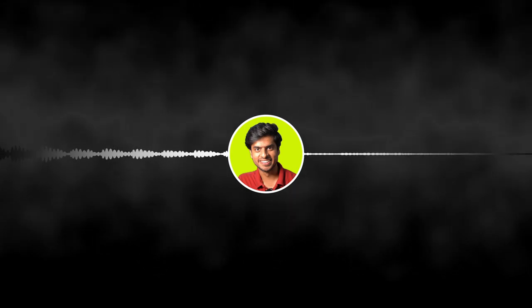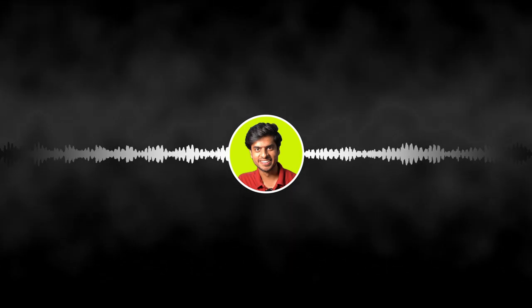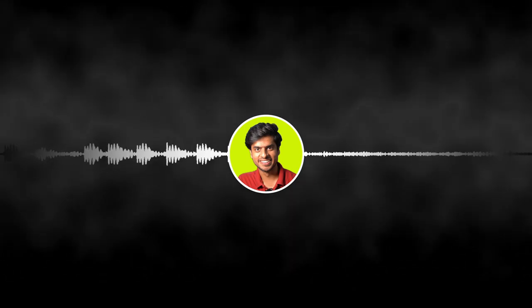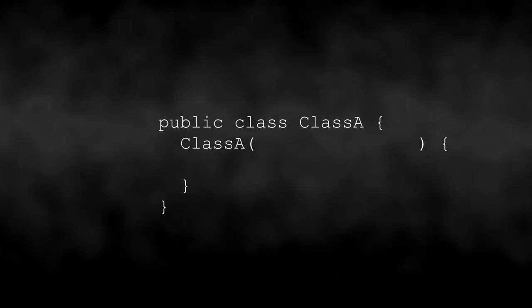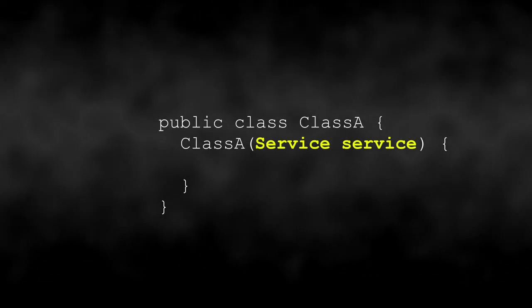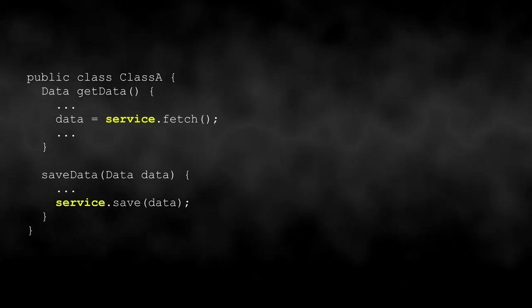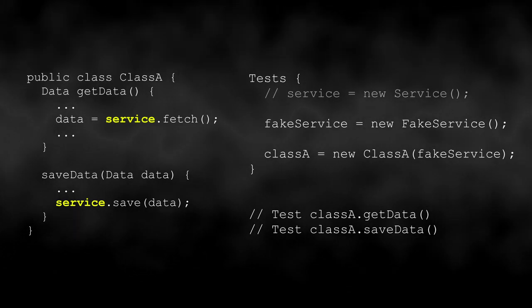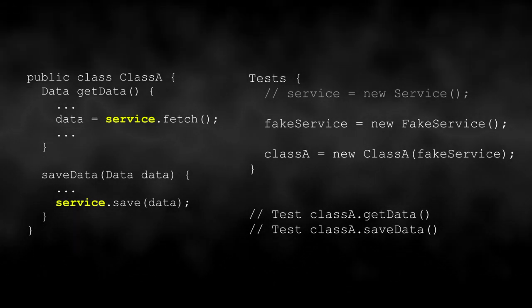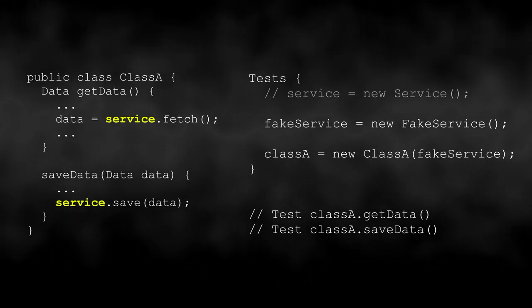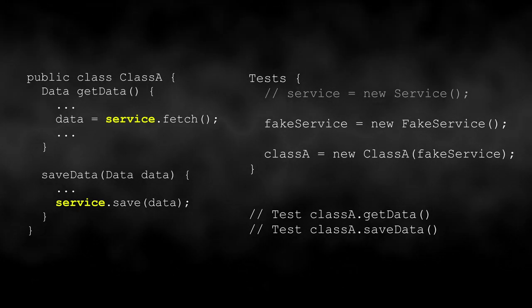Sixth: test doubles. In its simplest form, a test double is just a fake class or a fake method — a function or method that can stand in for a real implementation in a test. A classic example: you have class A that uses class B to fetch data from a server. When writing unit tests for class A, you wouldn't use class B because it makes no sense to bombard the server in a test. So you fake class B, and that fake is known as a test double.